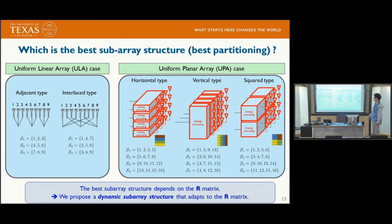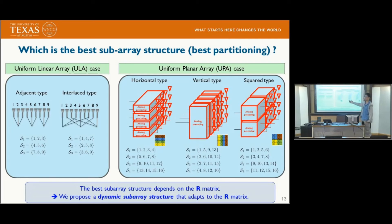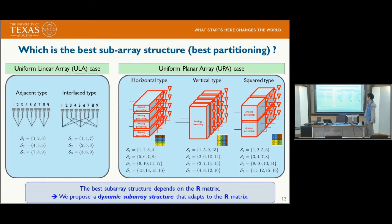This raises the question: which is the best sub-array structure? In the ULA case, is the adjacent type or the interlaced type best? In the UPA case, is it horizontal, vertical, or scaled type? The best type may not be any of these fixed structures. We know that the best sub-array structure depends on the covariance matrix R, so we propose a dynamic sub-array structure that adapts to R.